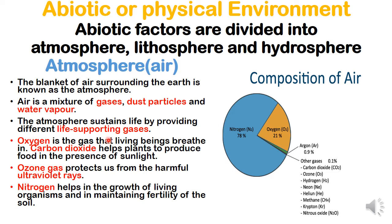Oxygen is the gas that living beings breathe in. Carbon dioxide helps plants to produce food in the presence of sunlight. Always remember: plants take carbon dioxide in the presence of sunlight. If there is no carbon dioxide, there will be no oxygen, because it is from plants — using carbon dioxide — that we get oxygen. Ozone gas protects us from harmful ultraviolet rays — it purifies the sun's rays before they reach the earth.